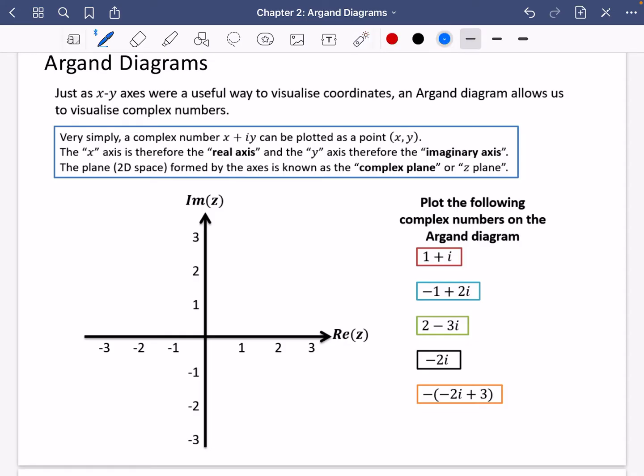So really straightforward for these first bits. We're going to plot these complex numbers on the Argand diagram. So we have 1 plus i. That means there's going to be 1 on the real part and 1 on the imaginary part. So we can just plot that there as a little point. Usually a cross or a dot will do for these.